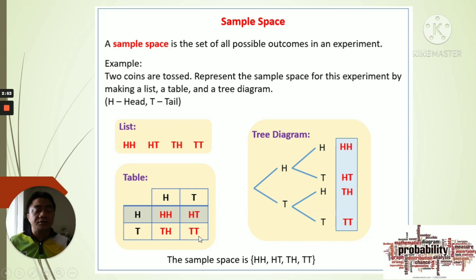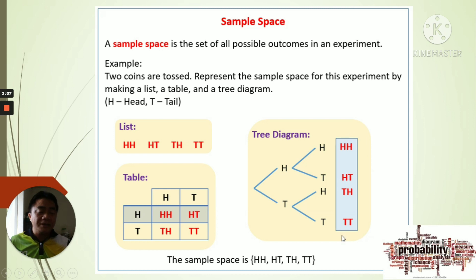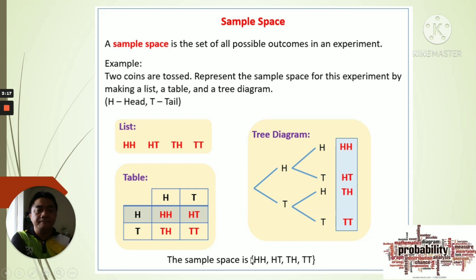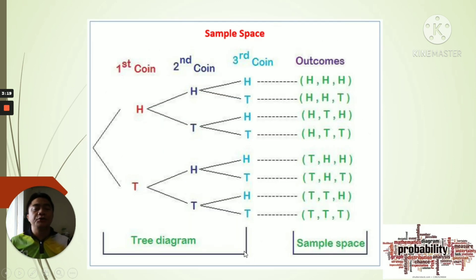Tossing two coins gives four possible outcomes. The same four outcomes appear in a tree diagram. Written in set form, the sample space looks like this. Next, if we toss three coins — even though we add more coins, we still have heads and tails as our basic outcomes.